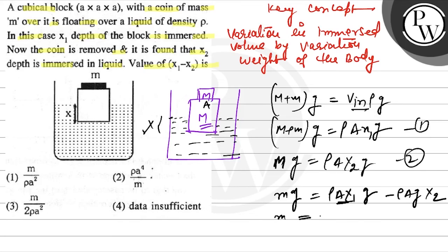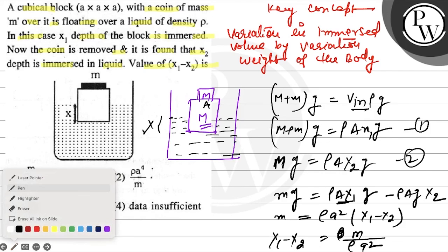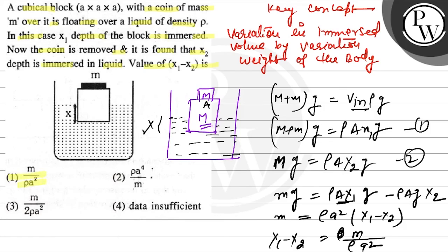Therefore, m equals ρ into a² into (x1 minus x2). Solving for x1 minus x2: x1 minus x2 equals m upon ρa². So the final answer to the question is option 1. I hope you understood it, best of luck.